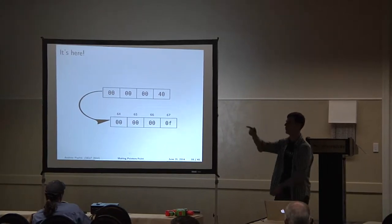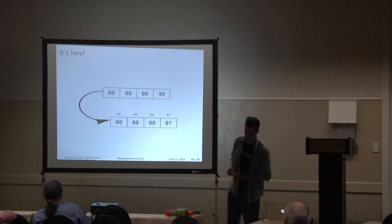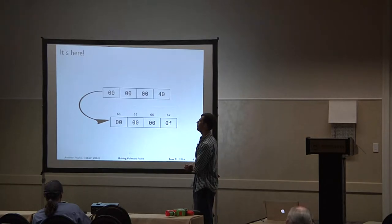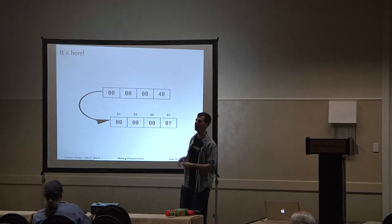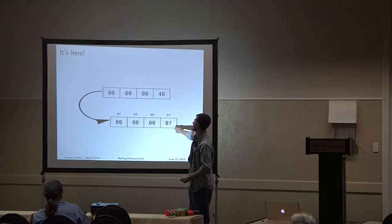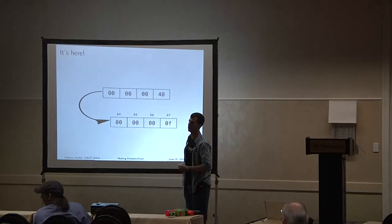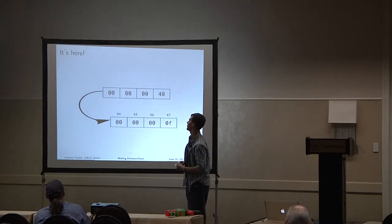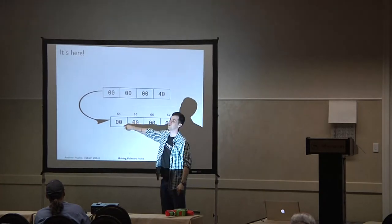Question from the audience: do pointers always point at the most significant or least significant byte, or does it vary? The question was, do pointers point to the most significant or the least significant byte? I believe it points to the start. Depending on a system's endianness, the most significant byte in some systems would be here, and in others it would be here. It is pointing at the lowest address of the dataset, because as I'll get to later, you can have stuff behind this that can just get bigger, so you need to point at the start.